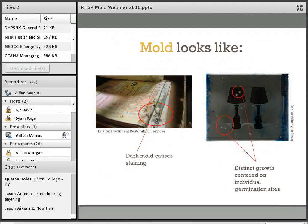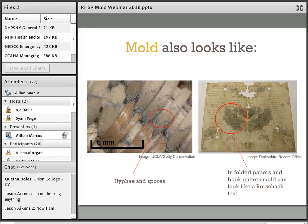Some mold can appear as splotchy or dark discoloration patches, as you can see in the gutter of the ledger in the photo on the left. On the right, a cellulose acetate negative exhibits very distinct sites of circular mold growth — those little circles or dots are active mold. Mold really likes cellulose acetate negatives, especially when relative humidity gets quite high. Mold which spreads in a closed book can cause staining that looks like a Rorschach blot, with holes in the paper caused when mold weakens the paper structure.